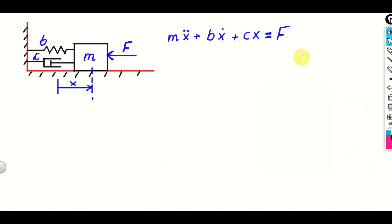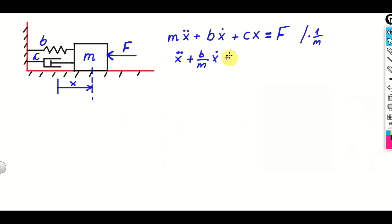In this tutorial, you will learn how to model this system from scratch and how to simulate it. The easiest approach for modeling and simulating this system in Simulink is to first obtain a state-space model. We derive the state-space model as follows. First, divide the equation by 1 over M. As a result we obtain: X-double-dot plus B over M times X-dot plus C over M times X equals 1 over M multiplying F.